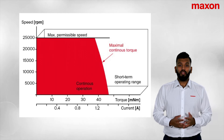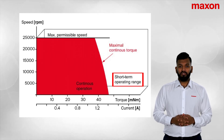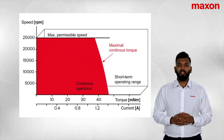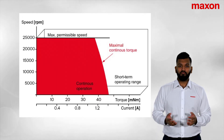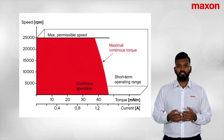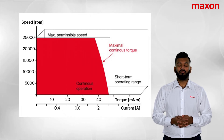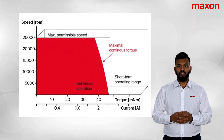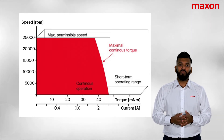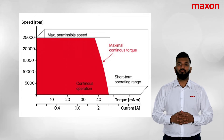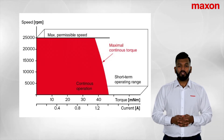Now let's look at the short-term operating range, which can be seen in the white area on the diagram. As you can see, this is not strictly defined — it is down to your application needs, motor requirements, and surrounding ambient conditions. In general, a motor can only be run to its continuous current limit, and this is due to thermal restrictions.